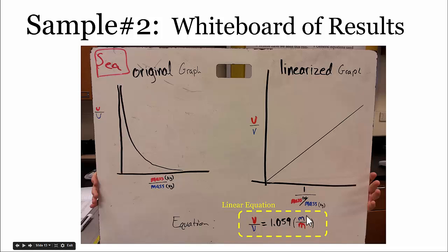The inverse of the mass ratio is just, instead of the mass ratio being the red mass to the blue mass, the inverse of that would be the blue mass divided by the red mass. So their equation became the red velocity divided by the blue velocity was equal to 1.059 times the blue's mass divided by the red's mass.